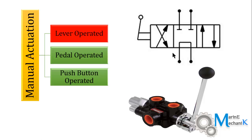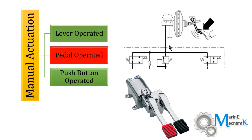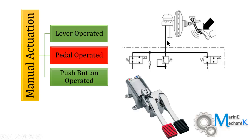The pedal operated type is very similar to what you find in cars or trucks. As you press the pedal, the control valve gets actuated and the valve shifts. As seen in this picture, this is a classic example of an Audi hydraulic drive system. The pedal can be pressed by the leg or sometimes the hand. In the Audi circuit diagram, as you press the pedal the control valve shifts and the brake is applied.